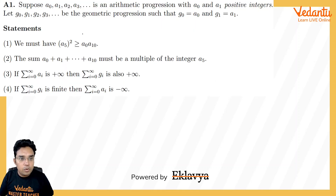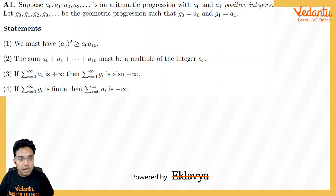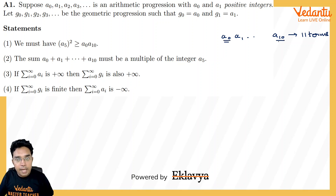The first question says: suppose A0, A1, A2, A3 is an AP with A0 and A1 positive integers, and G0, G1, G2 is a geometric progression such that G0 equals A0 and G1 equals A1. The first part says A5 squared is greater than or equal to A0 times A10. Please understand: if A0, A1 and so on up to A10 are in AP, we have 11 terms from A0 till A10.